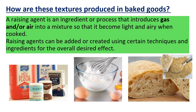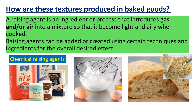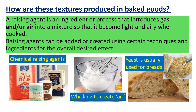Raising agents can be added or created using certain techniques and ingredients for the overall desired effect. Chemical raising agents are the main focus for this lesson — baking powder, cream of tartar, bicarb, and self-raising flour. Also whisking to create air, such as when making meringues by whisking egg whites to incorporate air. Yeast is a biological raising agent, usually used for breads; given the right conditions of warmth, time, moisture, and food, it creates a fermentation process that helps breads rise.